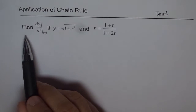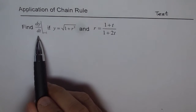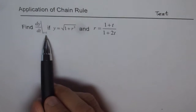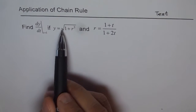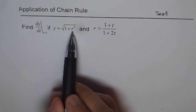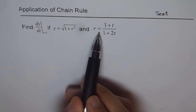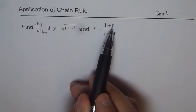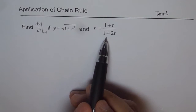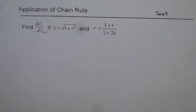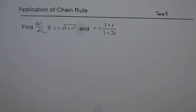The question is: find dy/dt at t equals 1, if y equals the square root of 1 plus r squared, and r equals (1 plus t) divided by (1 plus 2t). This is a really complicated problem, and once you try to solve it, all the skills you've learned in this set of videos will be required.